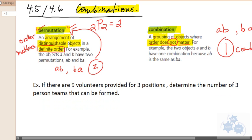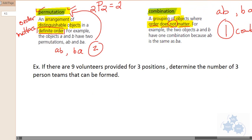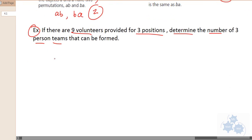So let's take a look at this example. If we have nine volunteers that are volunteering for three positions, we only need three of the nine. So the question says, determine the number of three-person teams that can be formed. Now if order mattered, let's say we had to have a president and a treasurer and a secretary or something.